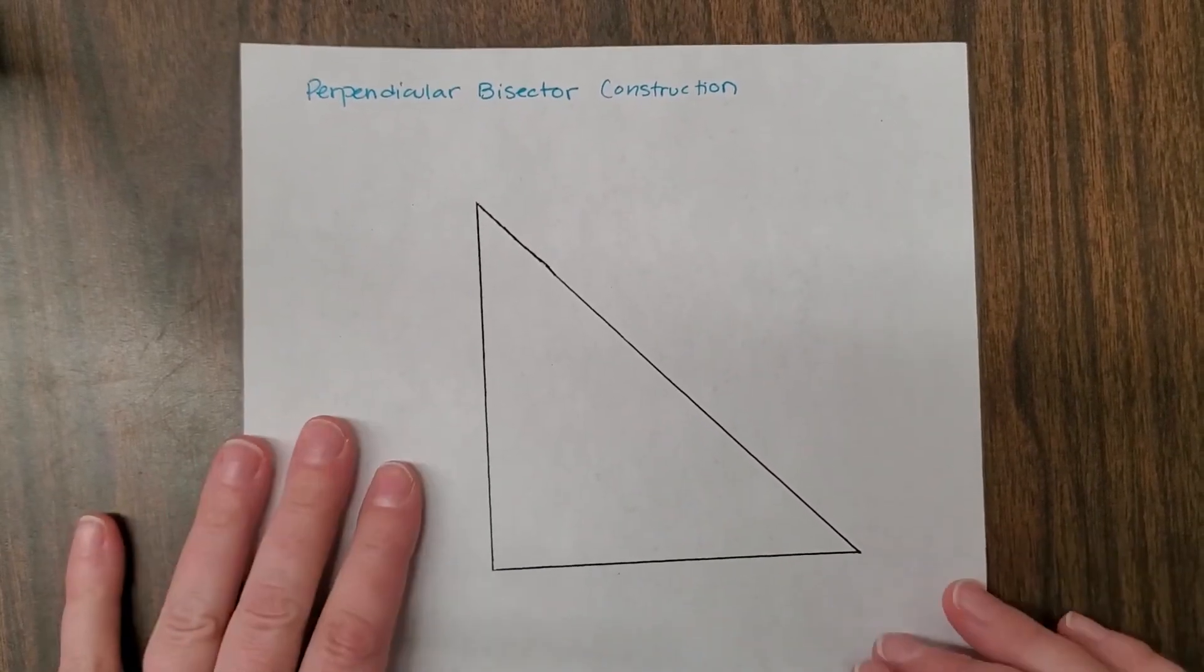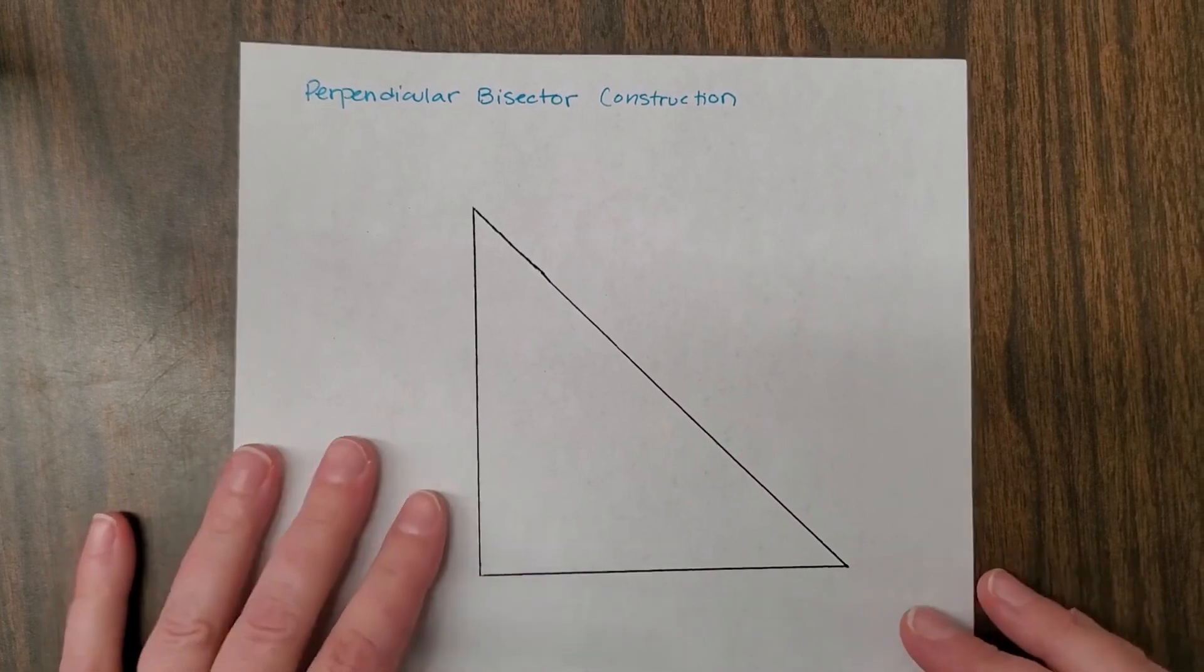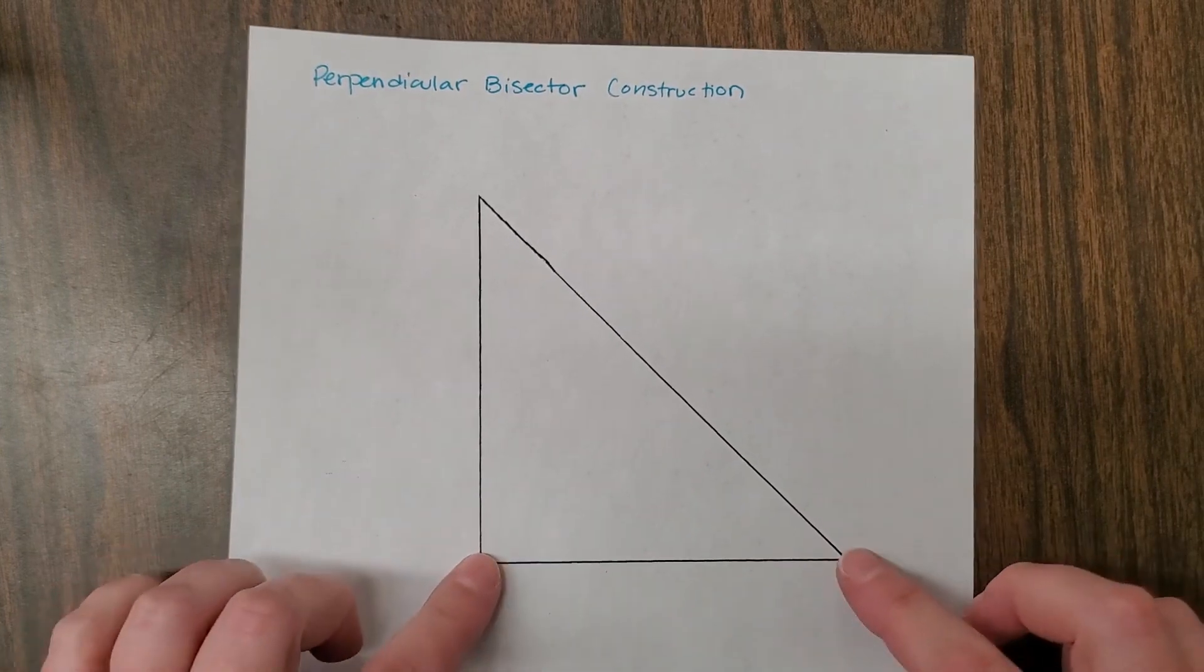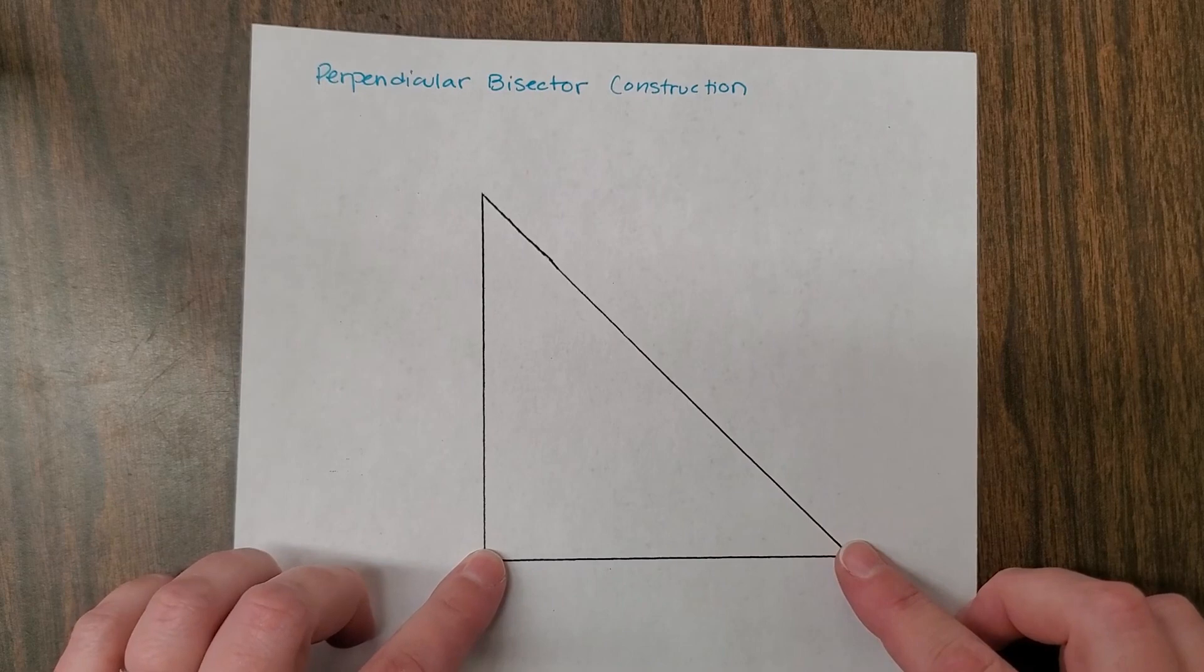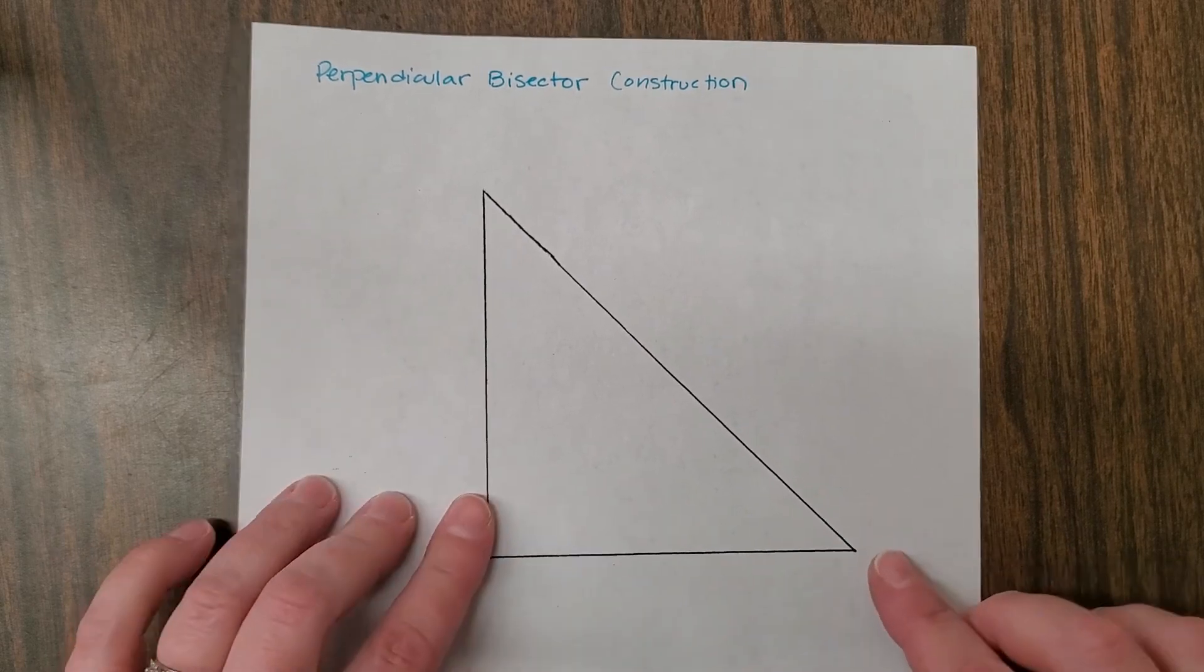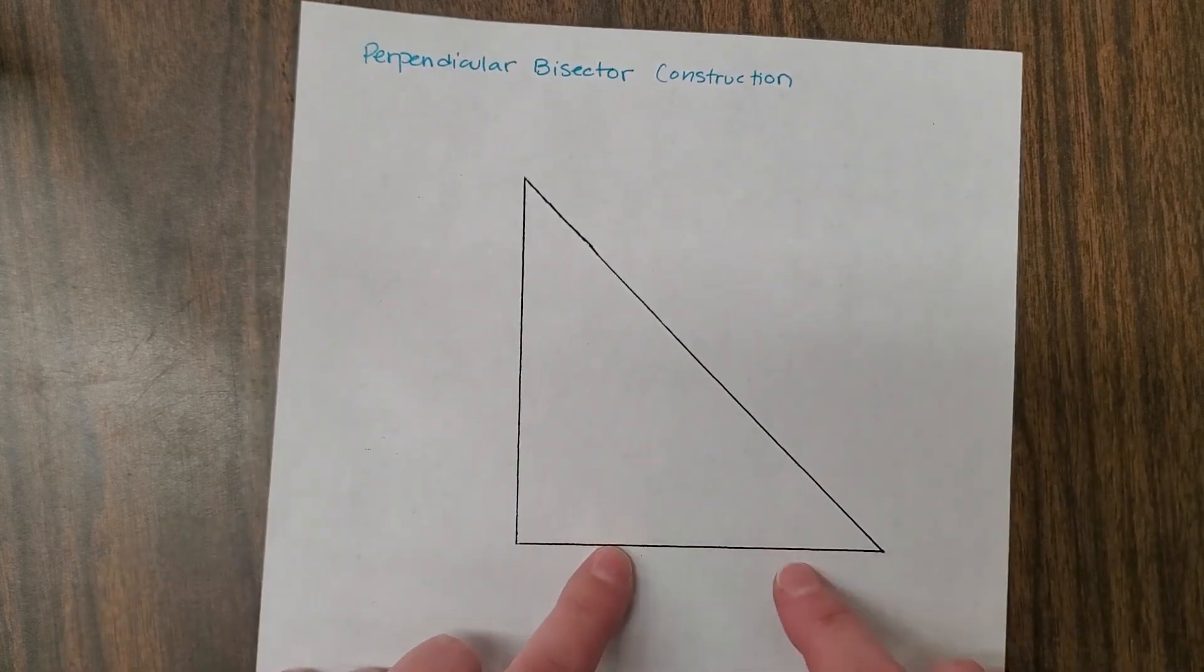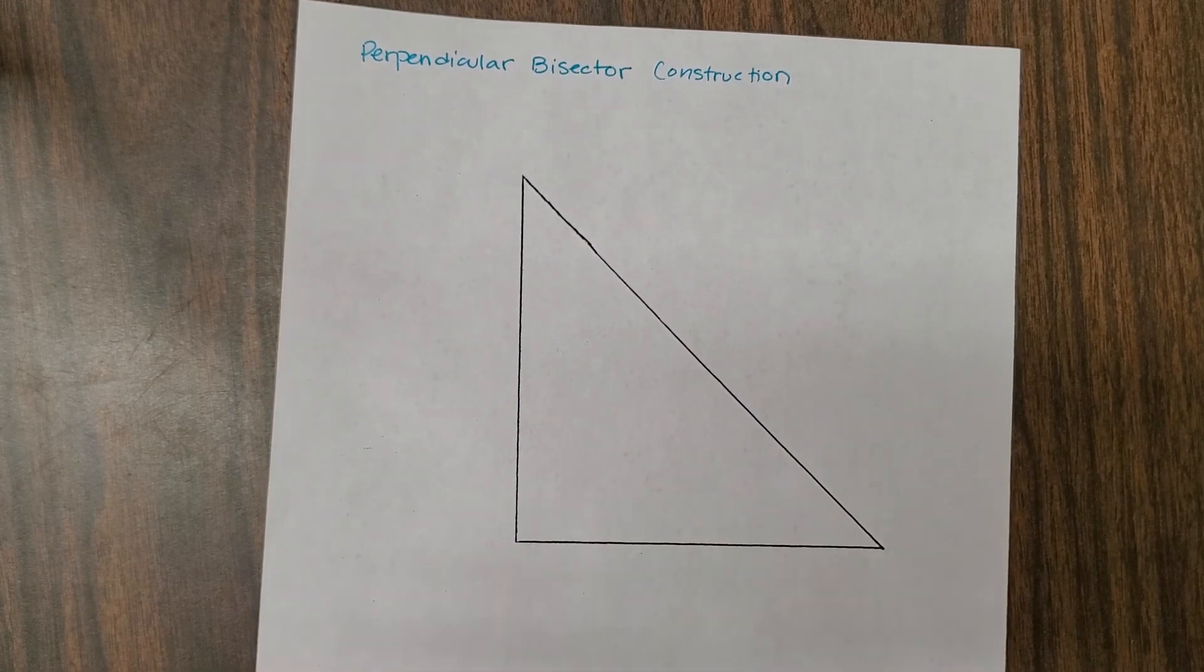All right, so I'm going to construct a perpendicular bisector. So basically what happens is you've got a segment and you're going to create some circles here in a minute so that you end up creating a line that is going to bisect this segment, so cut it in half, and then also meet at 90 degrees.